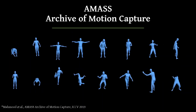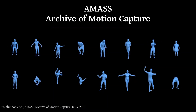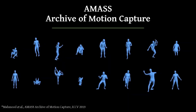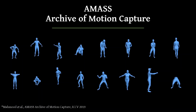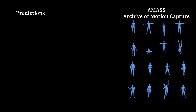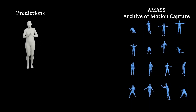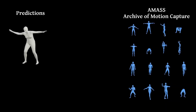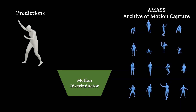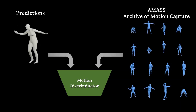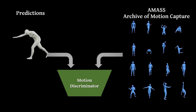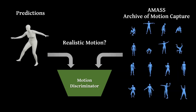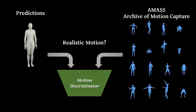The question is: how can we obtain realistic 3D human motions from our generator? To achieve this, we train a motion discriminator using a large-scale 3D motion capture dataset called AMASS. The motion discriminator takes predicted pose sequences along with pose sequences sampled from AMASS. The motion discriminator is trained to tell which sequence is real or fake. If the motion generator is able to fool the discriminator, then the predicted motion is realistic. Training both the generator and discriminator together results in a method that achieves state-of-the-art performance.